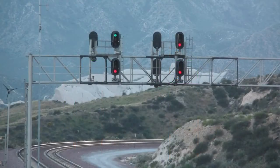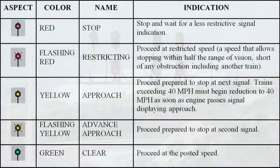Aspect is the railroad term for the color or color combination that a signal displays. A signal's aspect is translated by the railroad signal rules into its indication, or the instruction that it conveys. For example, a green aspect gives a clear indication, a yellow aspect gives an approach indication, and a red aspect gives a stop indication.